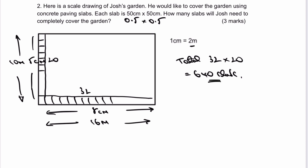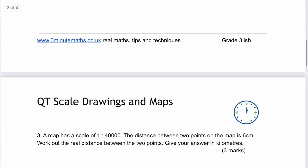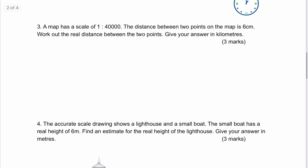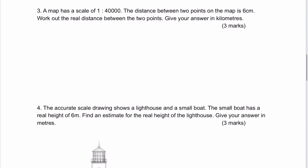Sometimes with these sorts of questions they ask you to add a price and check whether it's in budget. Just be very careful about the centimetres to metres conversion — it is a very favourite way of writing these questions. Moving on to question number three: a map has a scale factor of 1 to 40,000. The distance between two points on the map is 6 centimetres.